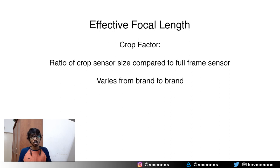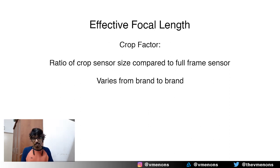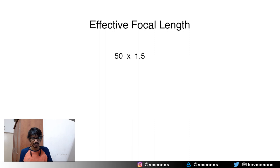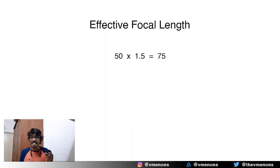When you use a full frame sensor you get to utilize the full focal length of your lens, so if I'm using this lens on a full frame camera I get the entire full 50 millimeters. But when you use a crop sensor there is something known as the crop factor — a ratio of the crop sensor size compared to the full frame sensor. Nikon crop sensors have a crop factor of 1.5 and Canon crop sensors have a crop factor of 1.6. So if I'm using a 50 millimeter lens on a Nikon crop sensor, I multiply 50 by 1.5 to get 75 — it would be the equivalent of using a 75 millimeter lens on a full frame camera.